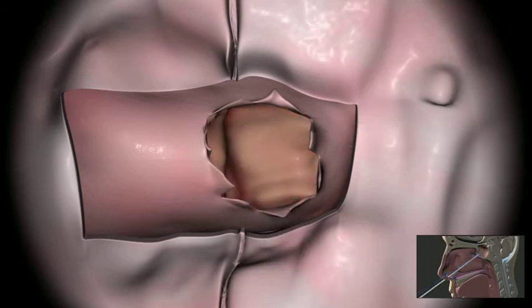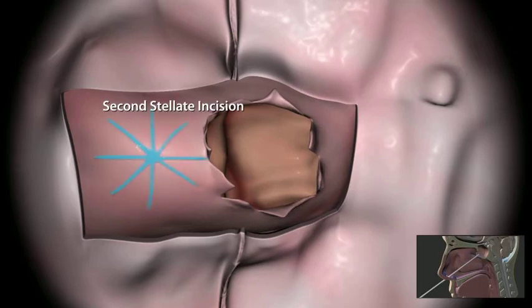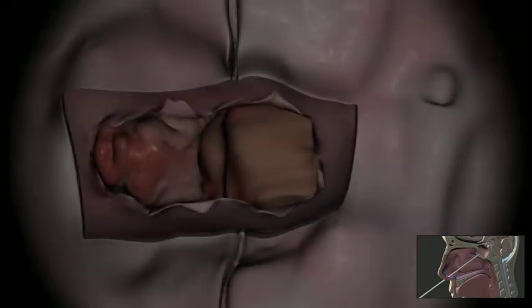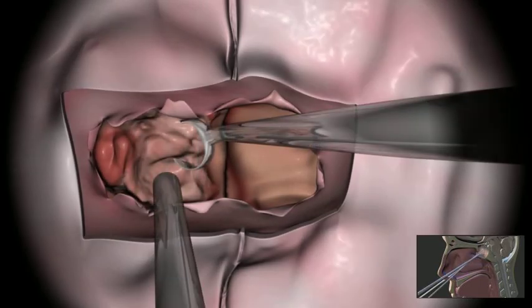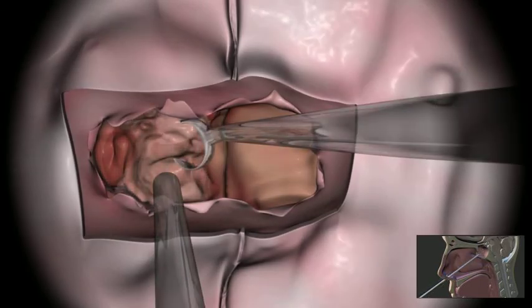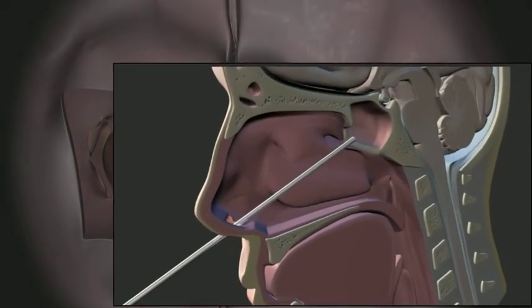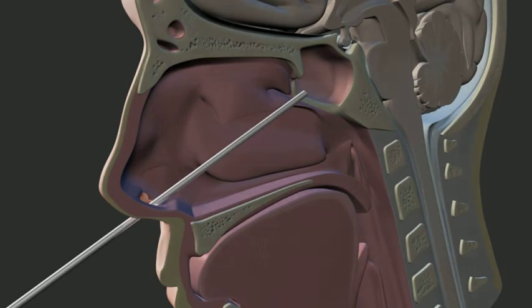After confirming the location of the internal carotid by neural navigation, Doppler ultrasound, and direct vision, the dura is incised over the cavernous sinus. The tumor is then removed from the cavernous sinus using a series of angled curettes and suction. With the tumor successfully removed, the primary portion of the procedure is complete.